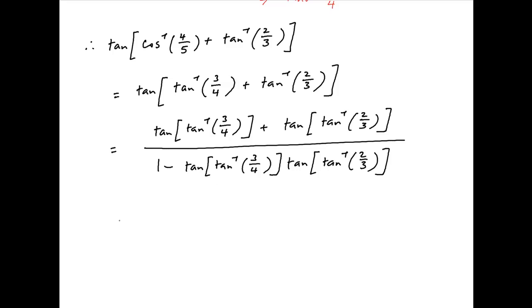This is equal to 3 upon 4 plus 2 upon 3 divided by 1 minus 3 upon 4 times 2 upon 3. This equals 9 plus 8 upon 12 in the numerator and 12 minus 6 upon 12 in the denominator which simplifies to 17 upon 6 which is the required answer.